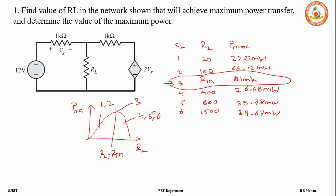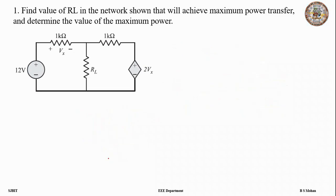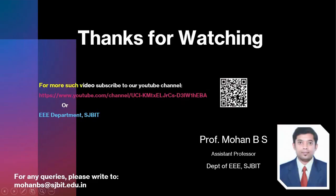So if asked to determine the value of RL and the maximum power, the answer is RL = 250 ohms and maximum power = 81 mW. Thank you for watching. Please subscribe to our channel to enhance your knowledge.